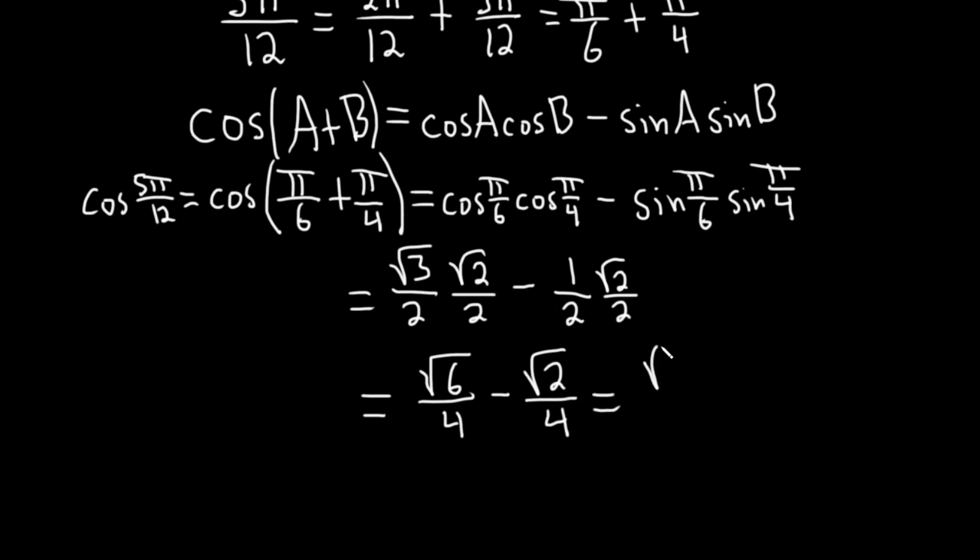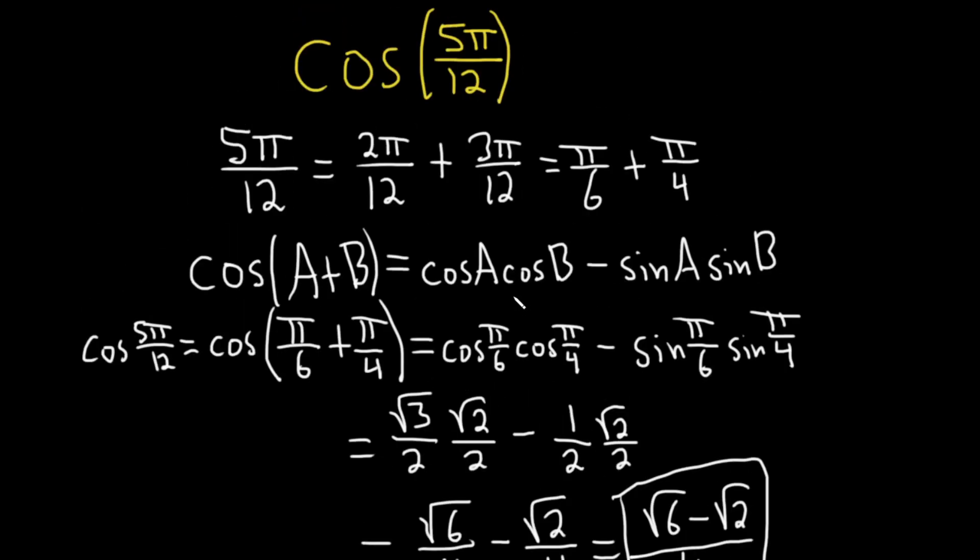So this is equal to the square root of 6 minus the square root of 2, all being divided by 4. And that would be the final answer. This would be the exact value of the cosine of 5π over 12. I hope this video has been helpful to someone. Good luck.